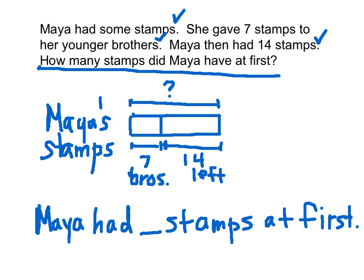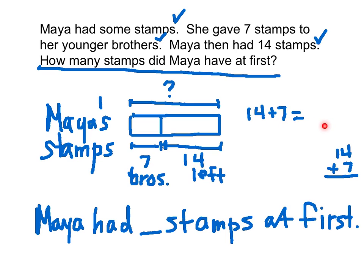Looking at this, it looks as if we are missing from here to here, and this would represent the entire bar, or the whole bar. Therefore, because we're missing the whole, this is going to be an addition problem. When we're missing the whole, we add, because we know the parts of 7 and 14 — we put them together to make our whole. So I'll make a number sentence for that: 14 plus 7 equals. Remember, a number sentence always goes horizontal.